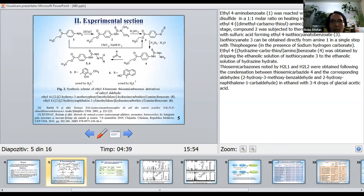In the second stage, compound 2 was subjected to thermal degradation in dioxane with sulfuric acid to form isothiocyanate 3. Isothiocyanate 3 can be obtained directly from the amine 1 in a single step with diphosgene in the presence of sodium hydrogen carbonate.